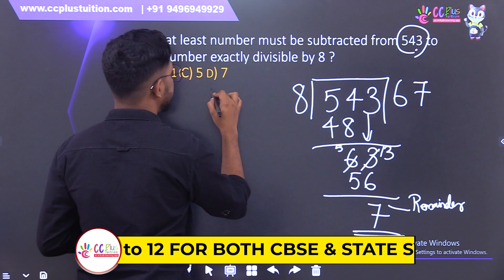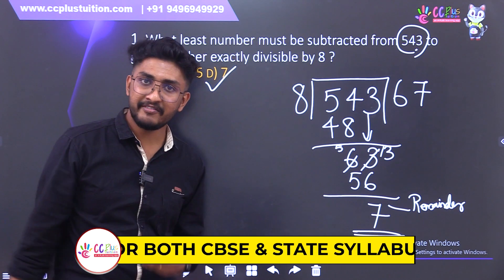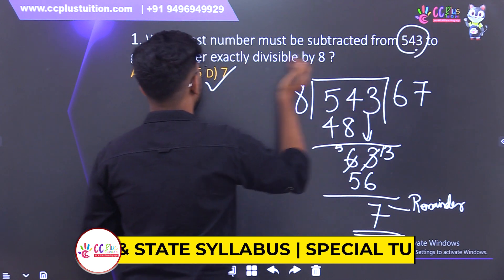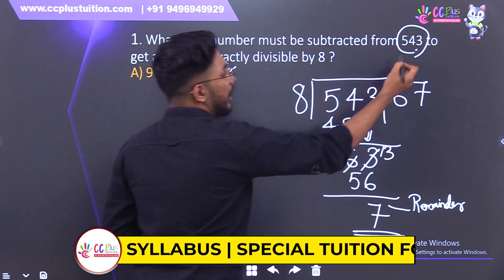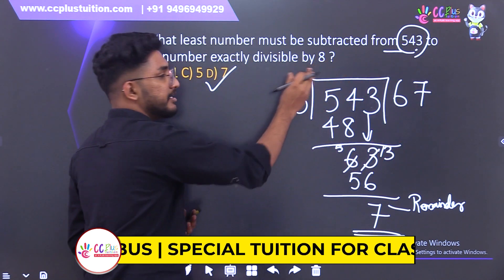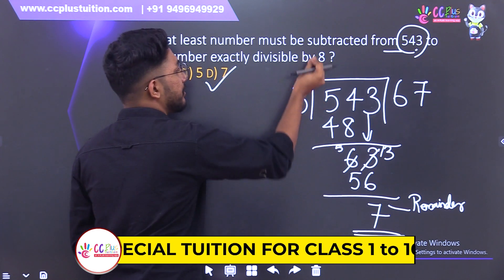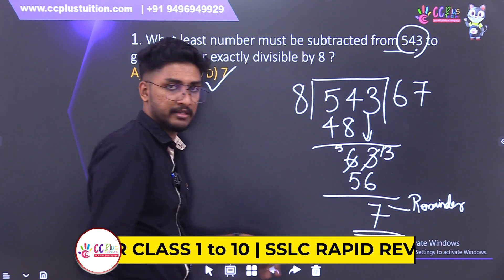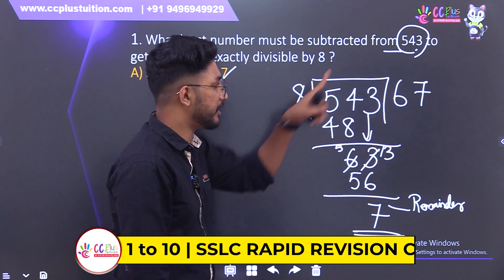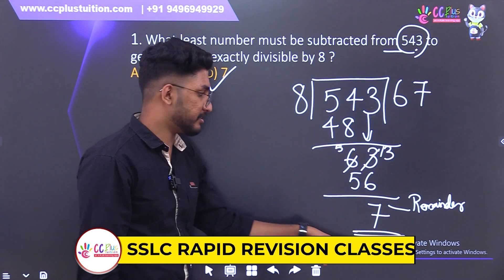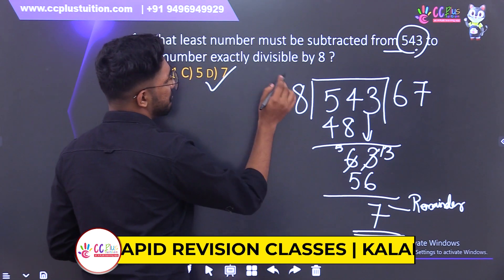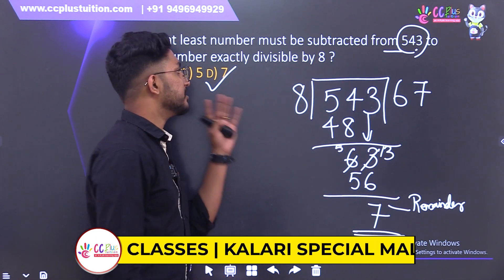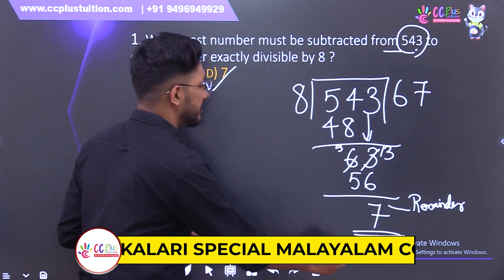The remainder is 7. Here is your answer. 7 is 7. The remainder is 7. Divisibility check: divide it. Remainder is correct. 543 minus 7 gives a number that is exactly divisible by 8.